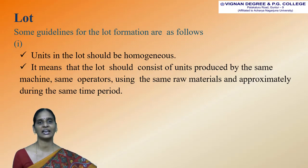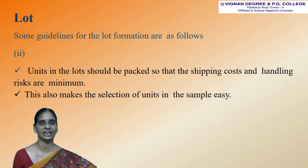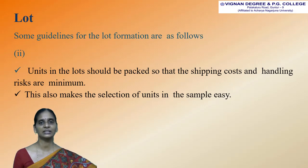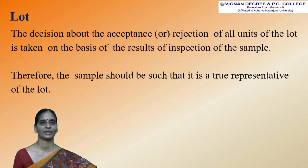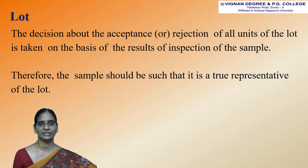This is the first guideline for the formation of lot. The second guideline is: units in the lot should be packed so that the shipping cost and handling risks are minimum. This also makes the selection of units in the sample easy. The decision about the acceptance or rejection of all units of the lot is taken on the basis of the results of inspection of the sample.